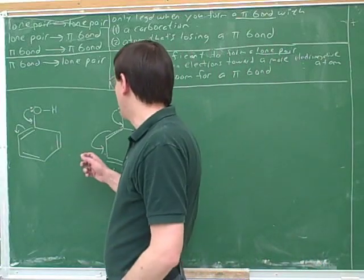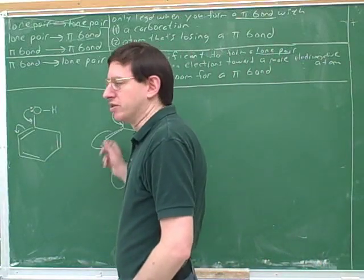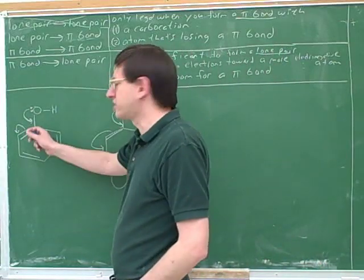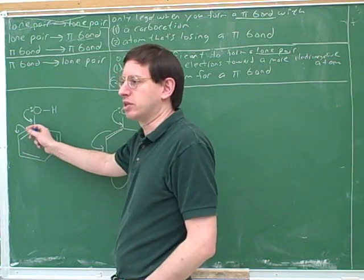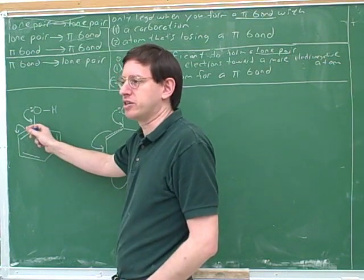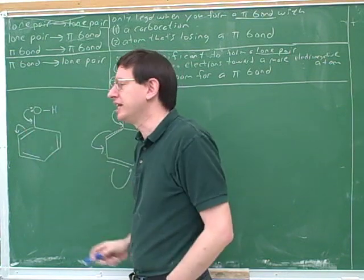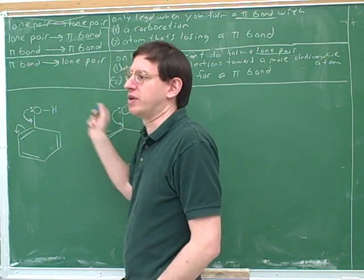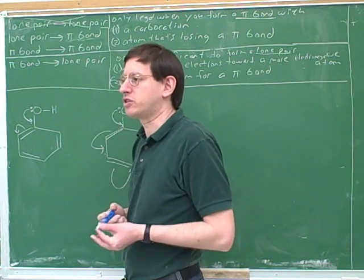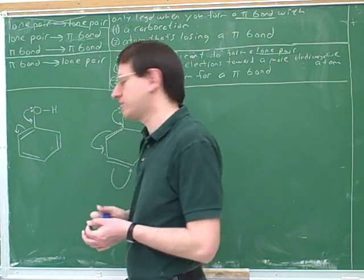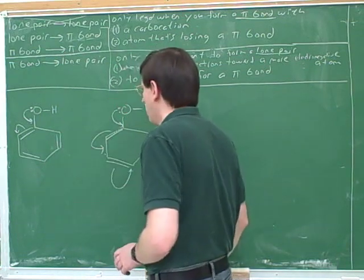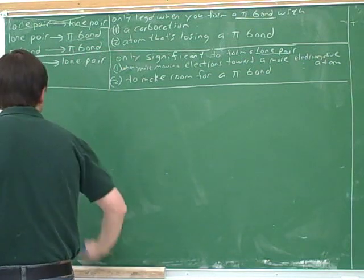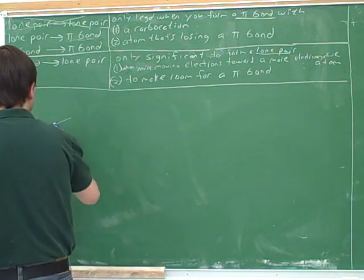Both of these are permissible arrows. Usually though we would want to move in small steps so that we don't miss any resonance structures. That's going to be important when working with benzene, because with benzene we're trying to draw all the resonance structures. So let's go back to work here.